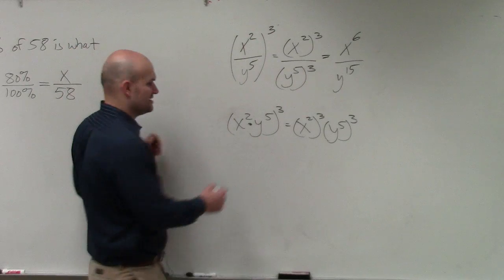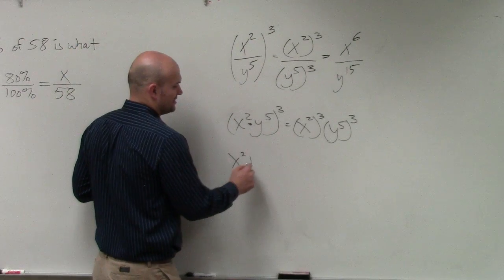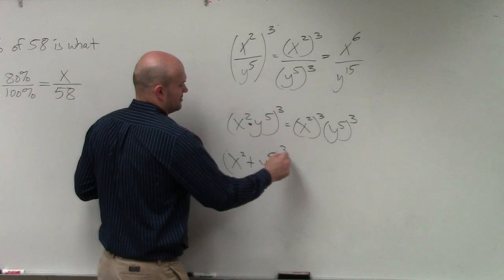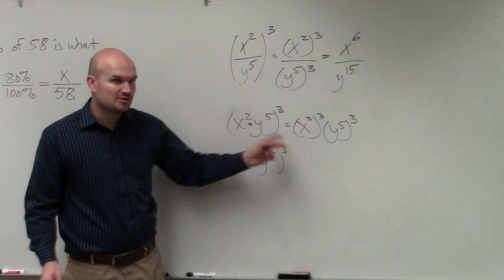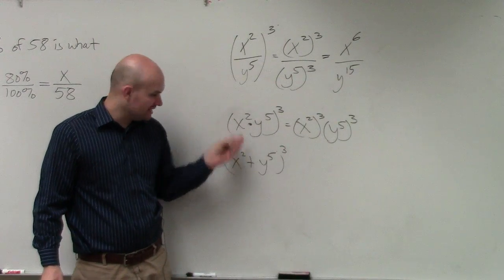However, here's where everybody makes their mistakes. What if I had an equation that looked like this? Now you can't use the distributive property. You can't distribute that three to both of them.